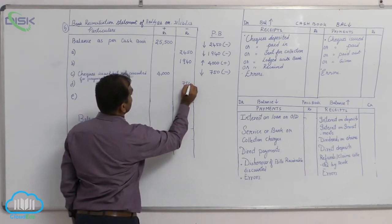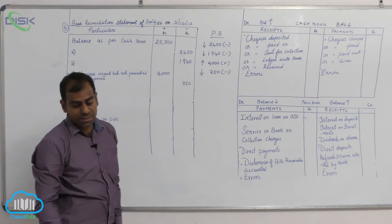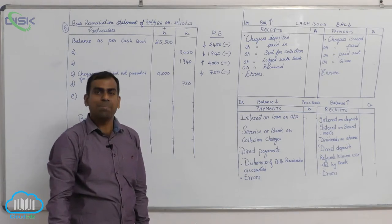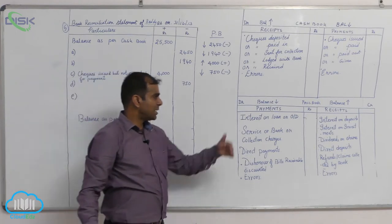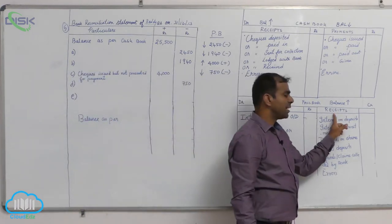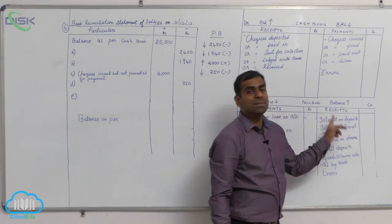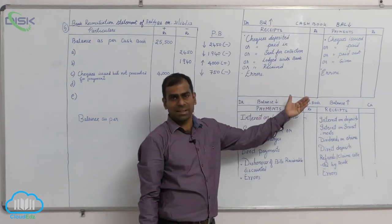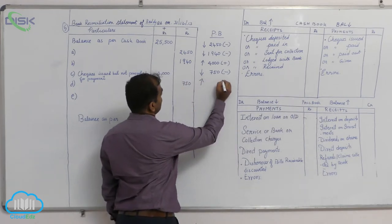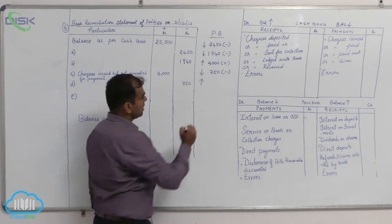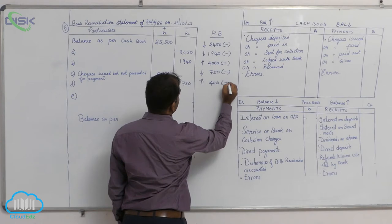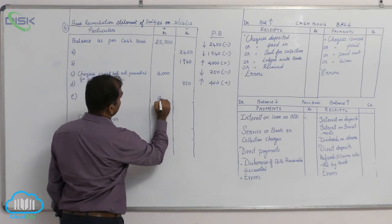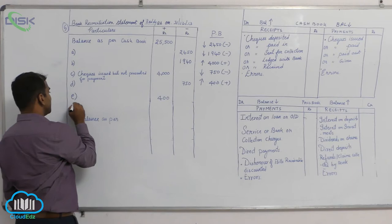Now the next transaction, that was E. It states that a check of 400 was credited in the passbook. So when you credit an amount, it means it is entered in the passbook on receipt side, so passbook balance will increase. You are finding out passbook balance only. He clearly told no entry was made in the cash book. So as a result we say passbook balance is increasing by 400. When it is increasing, you will add. So here for transaction E, the 400 should be entered in the plus column.